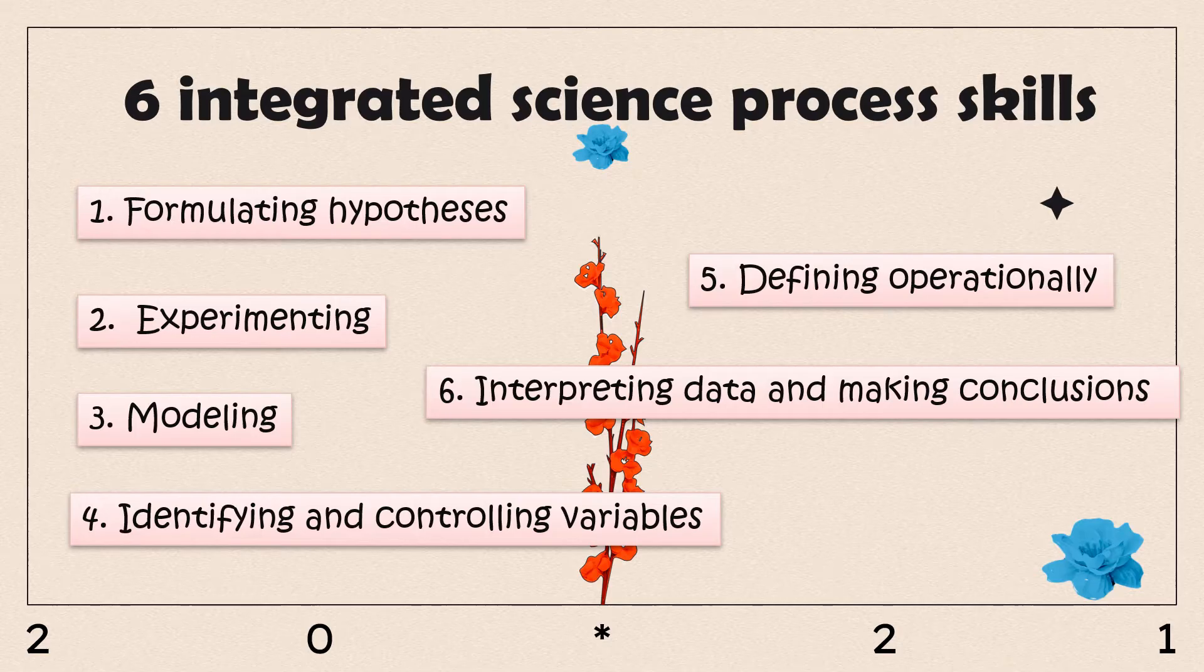Let's move to the six integrated science process skills. Number one: formulating hypothesis. Next: experimenting. Number three: modeling. Number four: identifying and controlling variables. Number five: defining operationally. Number six: interpreting data and making conclusion. That is the six integrated science process skills.